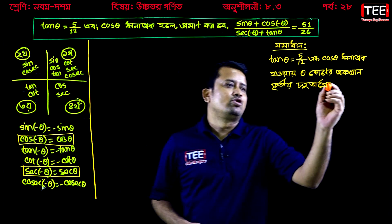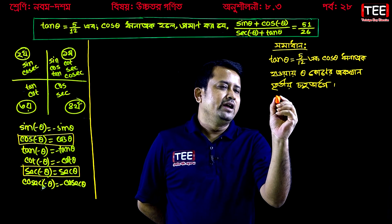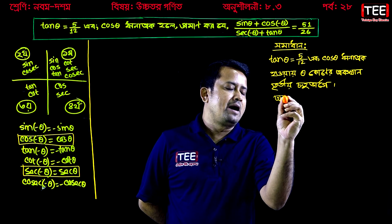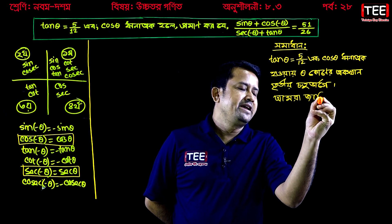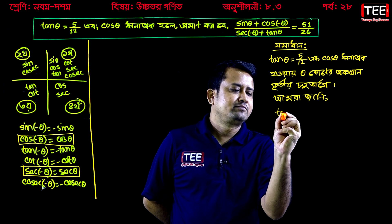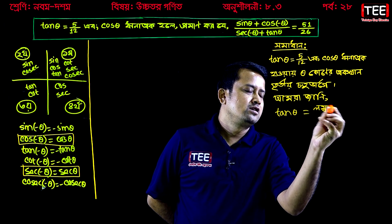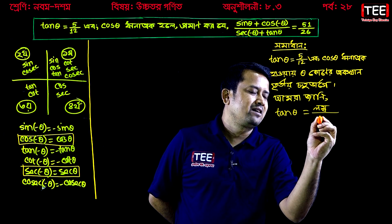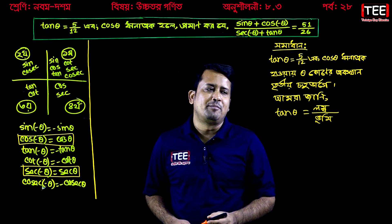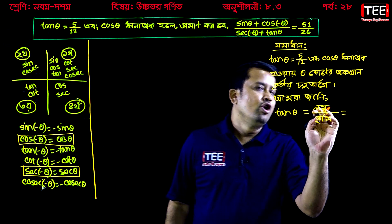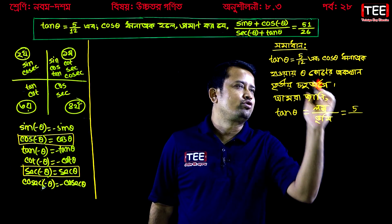If we go on the third step, the last step is we can go back to the second step right here again. So, 10-theta: lombo divided by bhoomni. Lombo is 5, and bhoomni is 12.